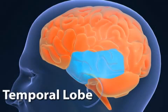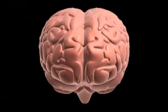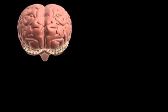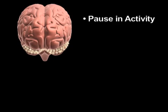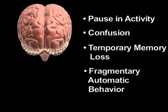The temporal lobe is the part of the brain most prone to develop seizures. It is responsible for many complex activities, including the formation and retrieval of memories and the control of emotional states. If a temporal lobe seizure spreads to both temporal regions, then the manifestation of the seizures increases, with a pause in ongoing activities, confusion, temporary memory loss, and fragmentary, automatic, robot-like behaviors.